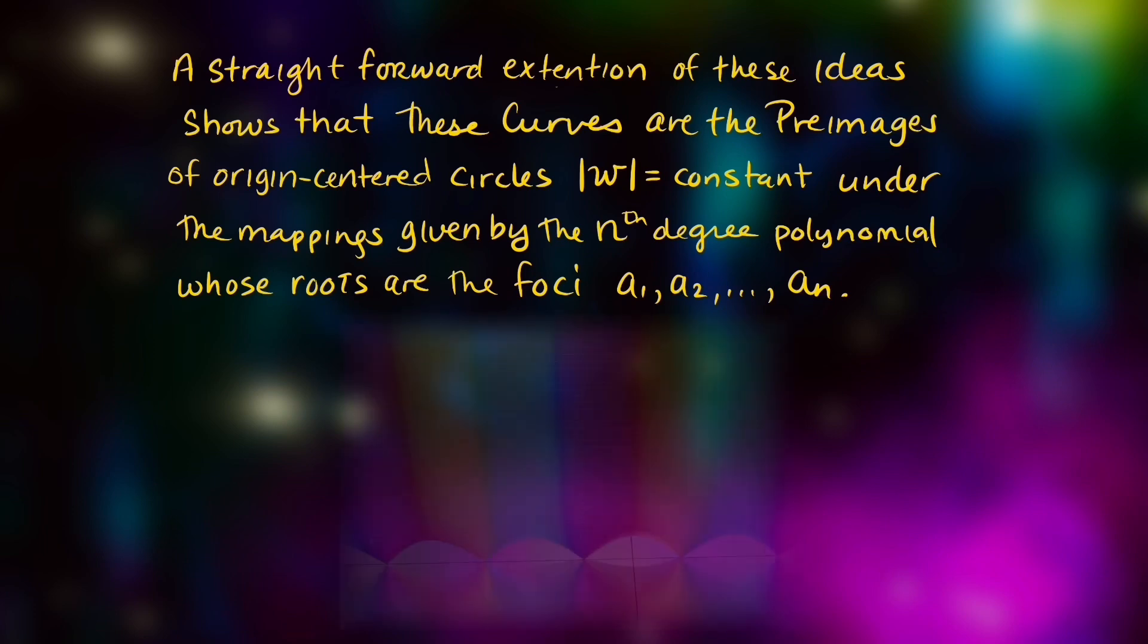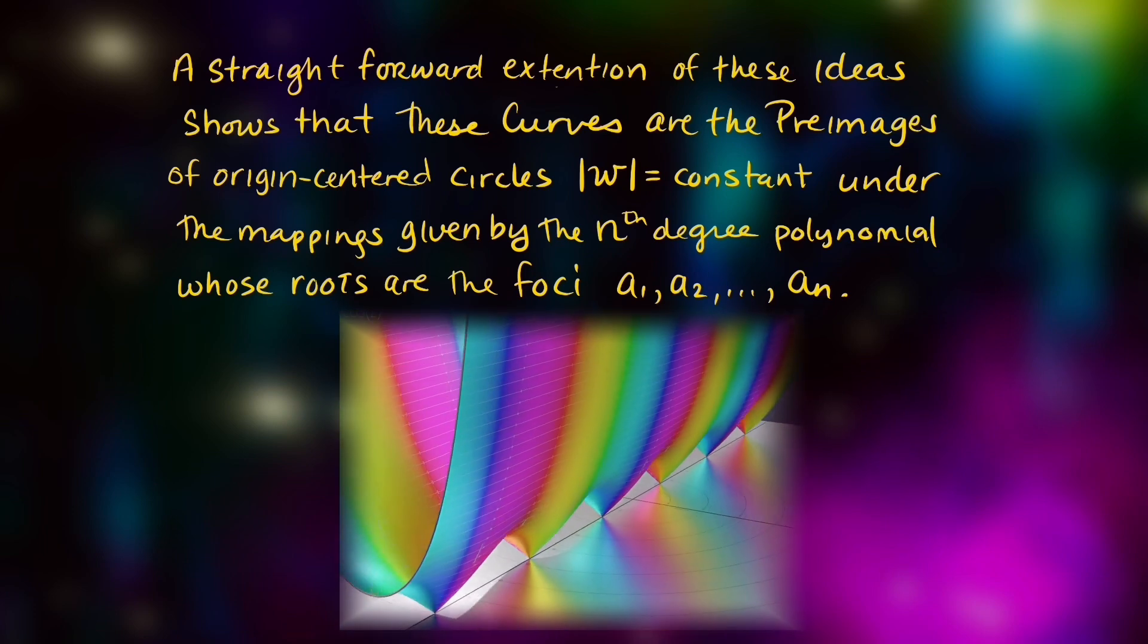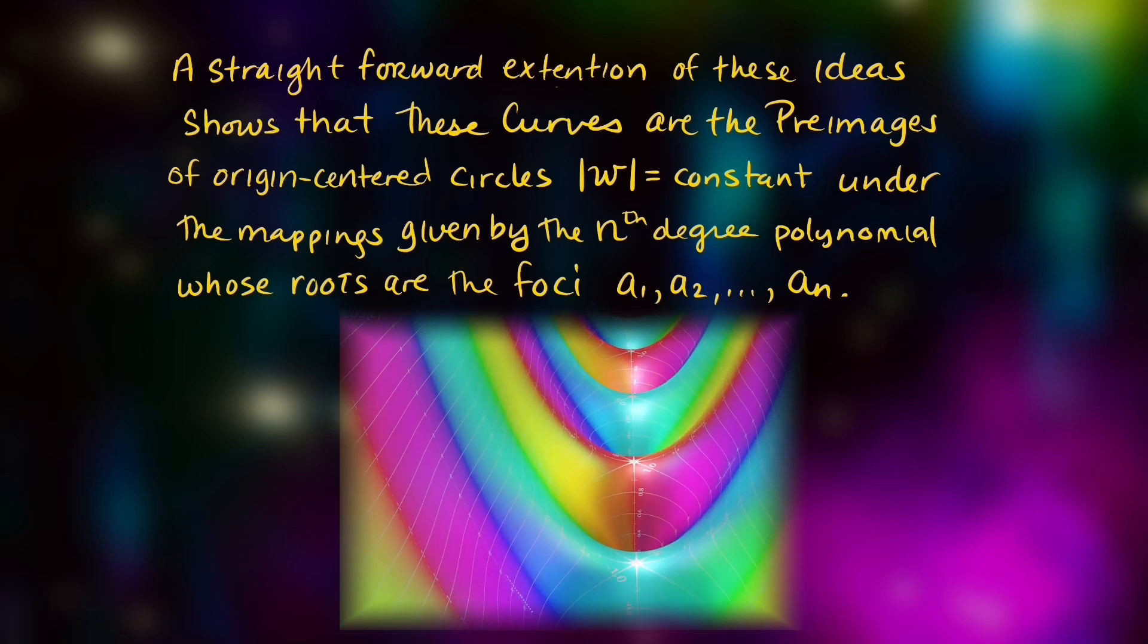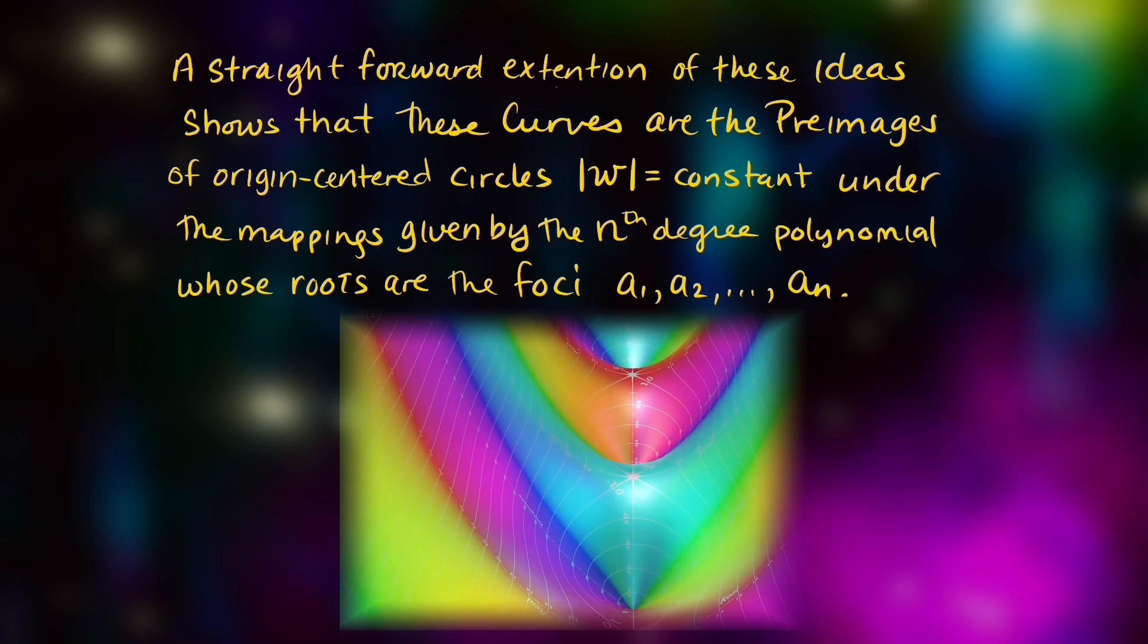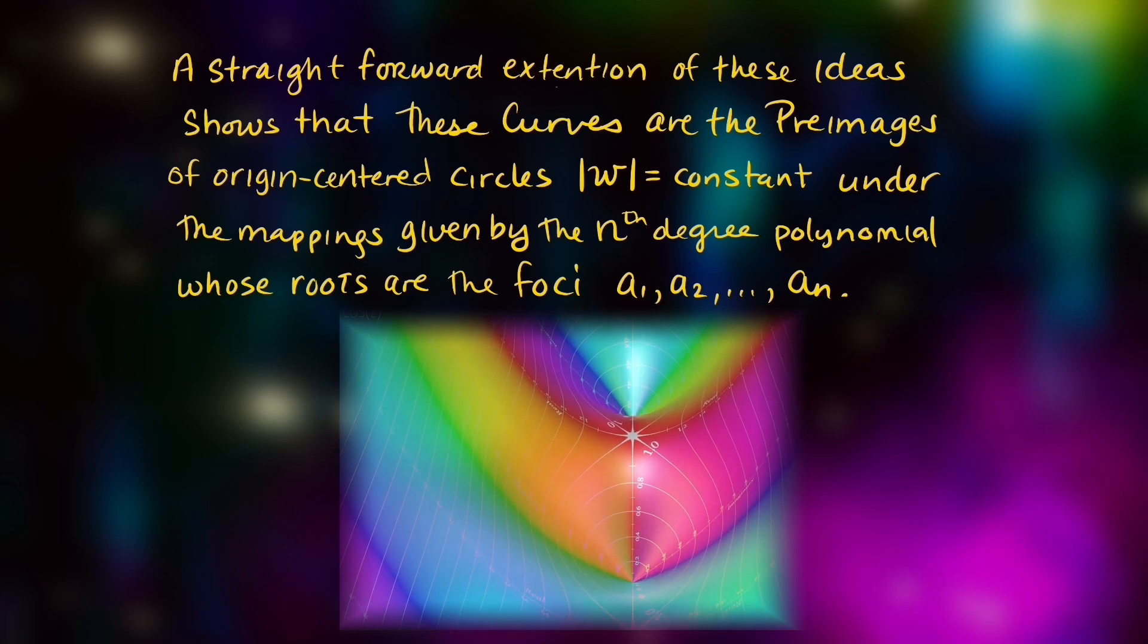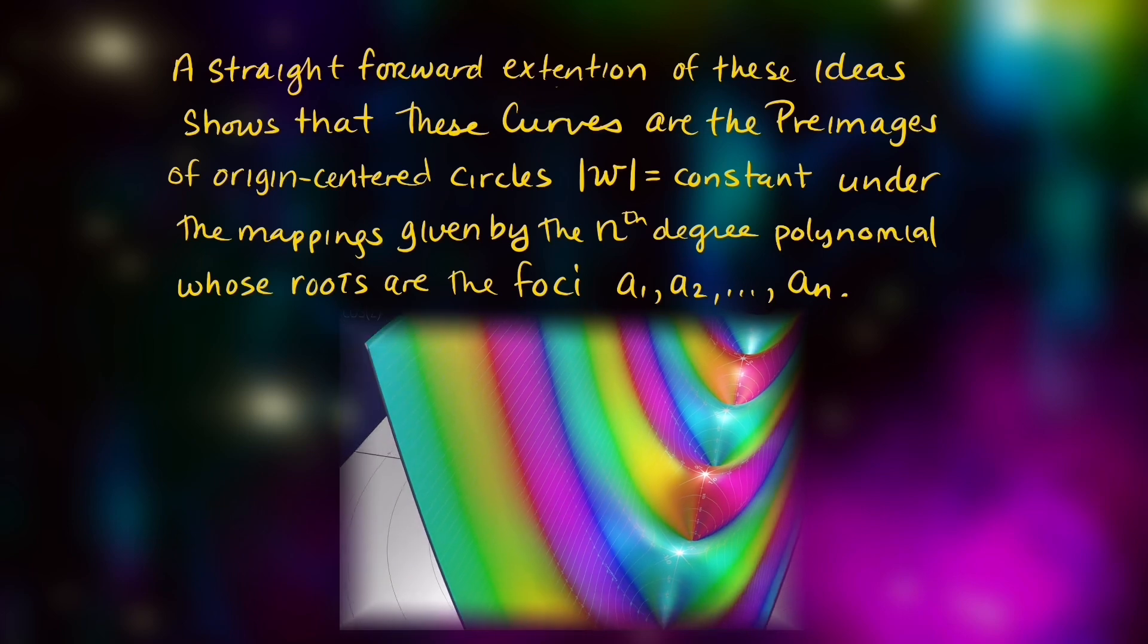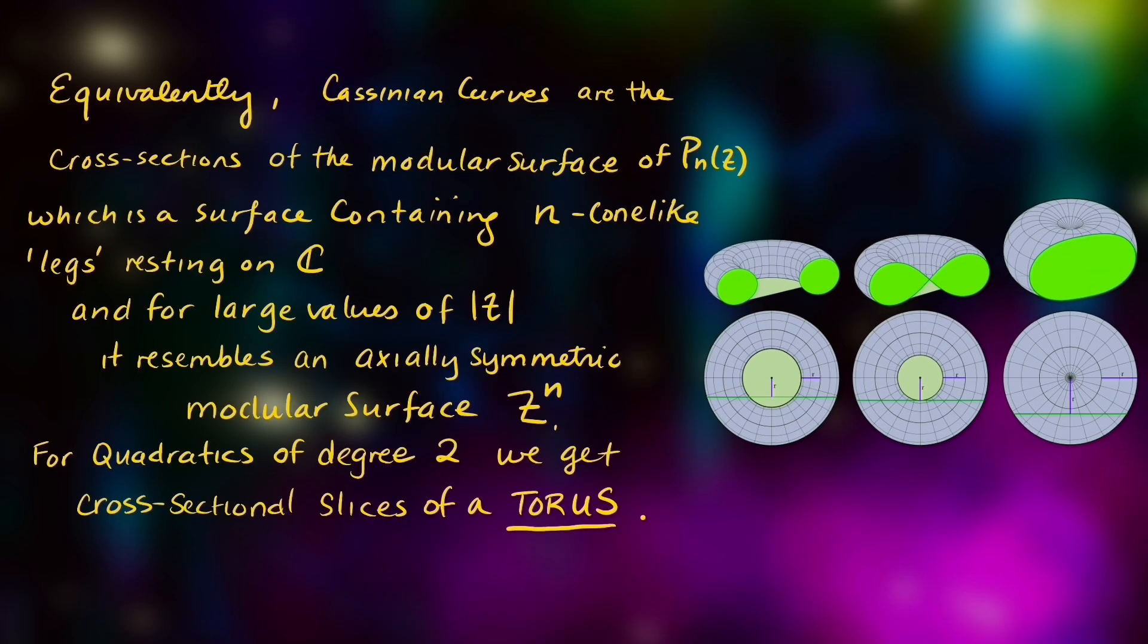A straightforward extension of these ideas shows that the curves are pre-images of an origin-centered circle whose modular is constant, and under the mappings given by the nth-degree polynomial whose roots are the foci a_1, a_2 through, let's say, a_n for an nth-degree polynomial.